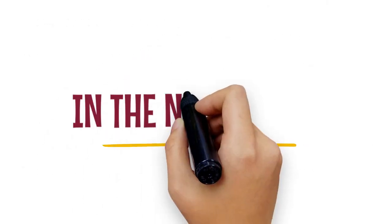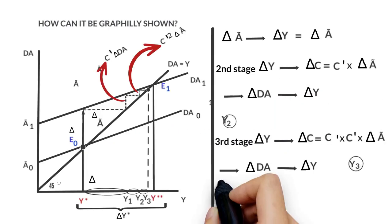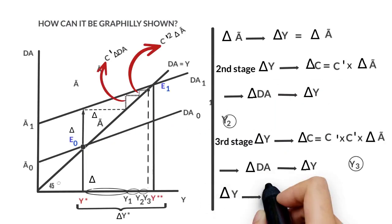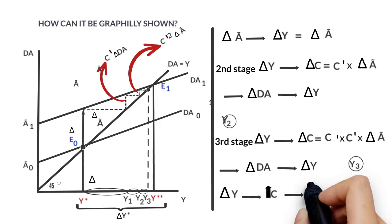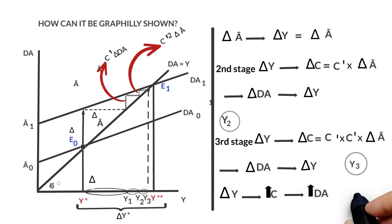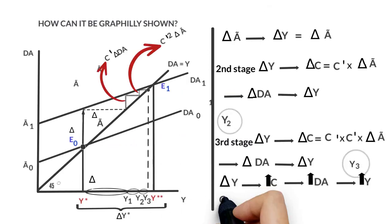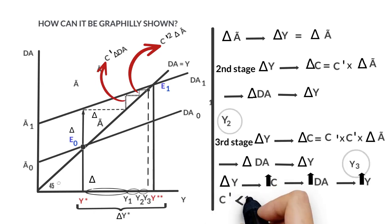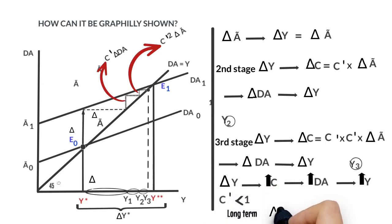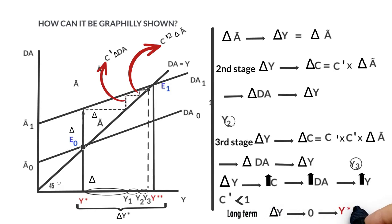In the next stages, it can be observed that the increase in income will produce an increase in consumption and, subsequently, an increase in aggregated demand, originating further increases in income, though these increases will be smaller. Why? Because the marginal propensity to consume is smaller than one. Therefore, in the long term, the increase in expenditure tends to zero, thus reaching equilibrium at the income level Y sub-2.